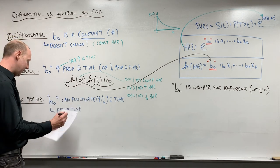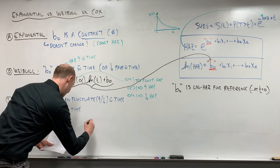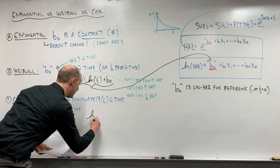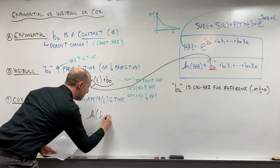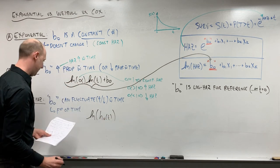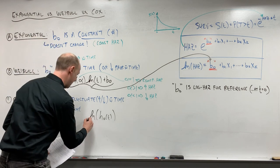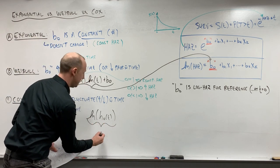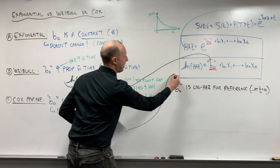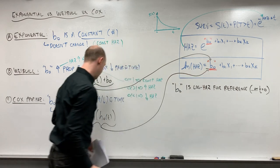Now, often the way this gets written is that we have the log H0 of t. So this is the function that's defining the hazard. And this here is what B0 is.